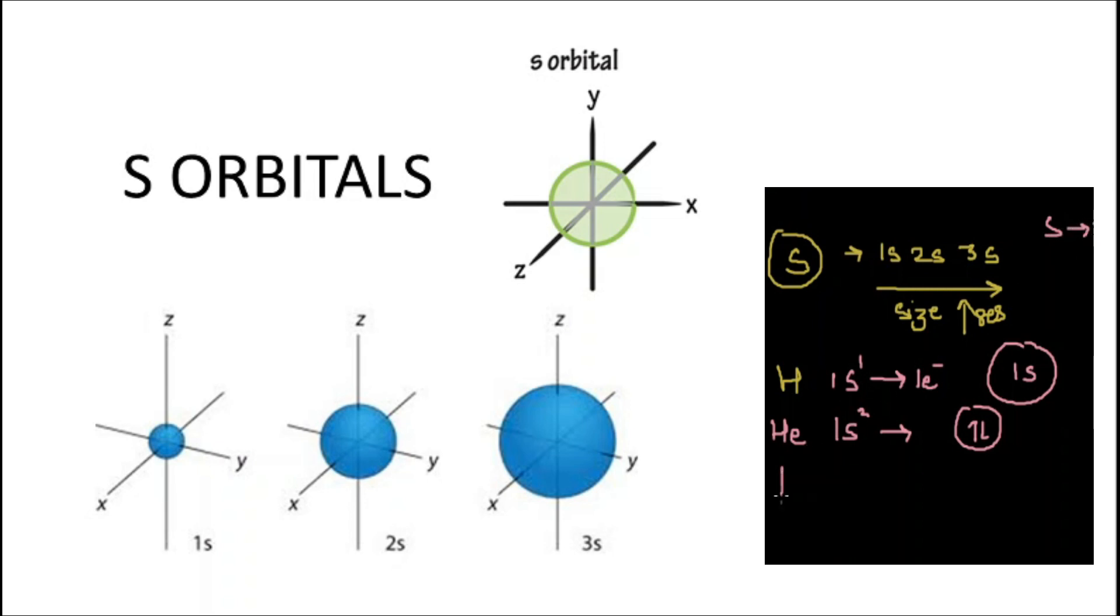When the third electron is added, it will automatically move to the higher energy orbital, that is 2s. As we have seen in the case of lithium, the electronic configuration is 1s2 2s1. In this case, the 1s orbital is completely filled, so the third electron has moved to the higher energy shell, the 2s orbital, and similarly for further elements.